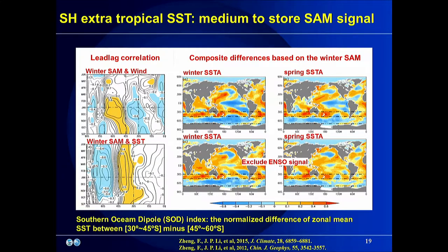This figure shows the lead-lag correlation between the winter SAM and surface wind at different months. A positive phase of the SAM features stronger westerlies in high latitudes but weaker westerlies in middle latitudes. Changes in surface wind would affect sea surface temperature by modulating the ocean heat budget. In high latitudes, sea surface temperature is cooler due to increased wind speed; in middle latitudes, sea surface temperature is warmer due to decreased wind speed. These SST anomalies persist to the following spring due to the large heat capacity of the ocean.